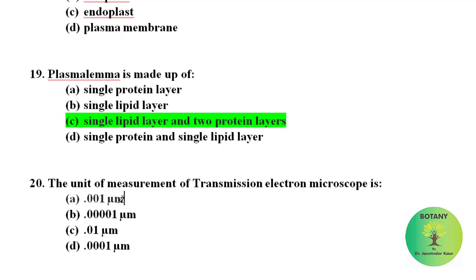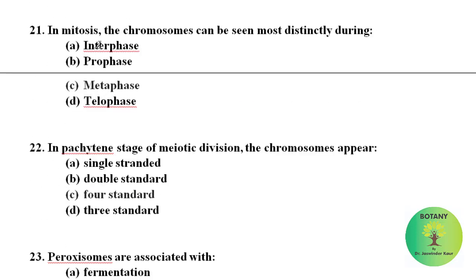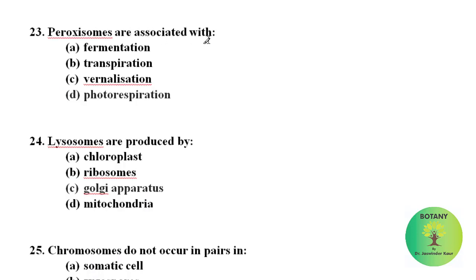In mitosis, the chromosomes can be seen most distinctly during metaphase when they are placed at equator. In pachytene stage of meiotic division, the chromosomes appear four stranded. Peroxisomes are associated with photorespiration.